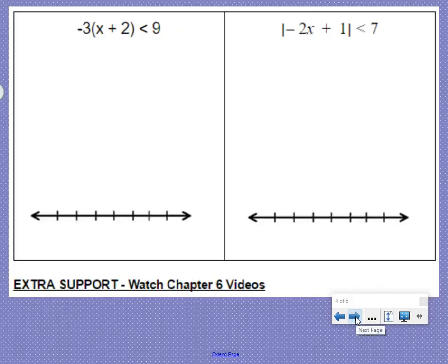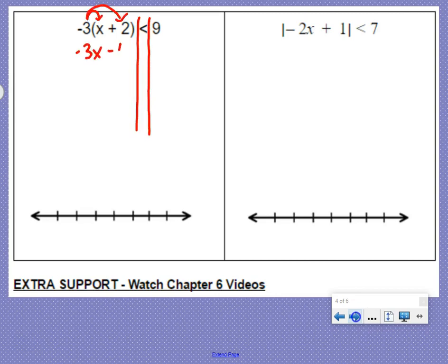Solving inequalities. So solving inequalities is very similar to solving equations. Just have an inequality symbol now. Distribute the negative 3. Negative 3x minus 6 is less than 9. Undo minus 6 with a plus 6 on both sides. We get negative 3x is less than 15.